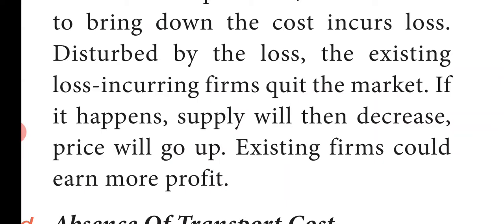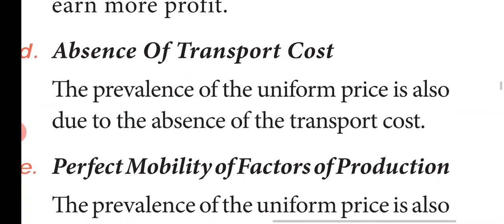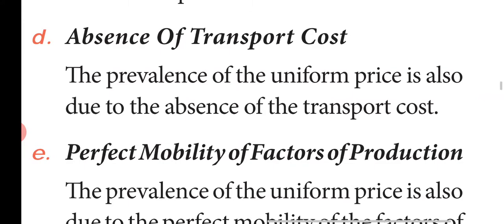Feature 4: Free entry and exit, and the absence of transport cost. The prevalence of a uniform price is also due to the absence of transport cost.